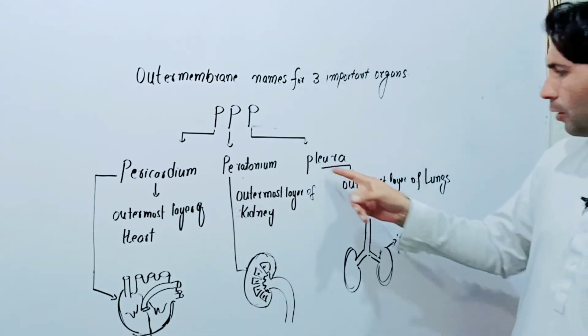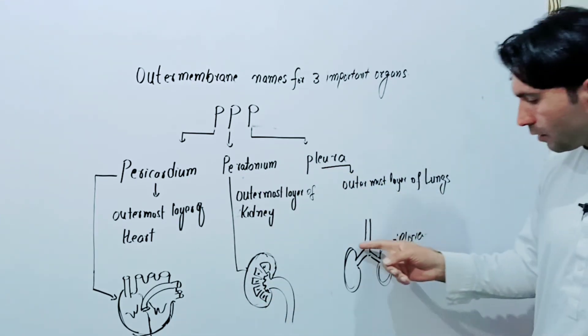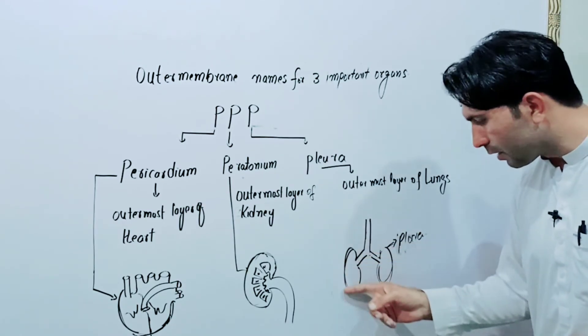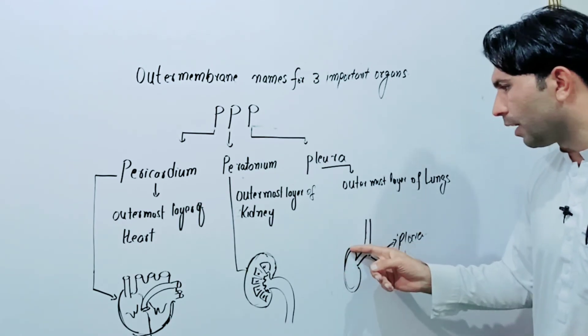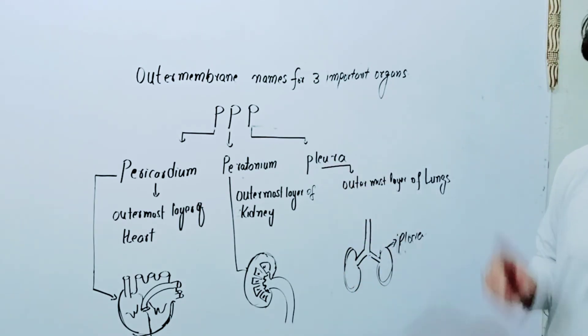Pleura is the outermost layer of the lungs. These are the lungs, and this is the outermost layer of the lungs — so this is called pleura. Thank you.